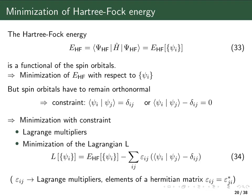The Slater determinant is essentially just an anti-symmetrized product of spin orbitals, which means that our Hartree-Fock energy — which is an integral over Slater determinants and the Hamiltonian of the system — is a function of the set of occupied spin orbitals. So if we want to minimize the Hartree-Fock energy, the things we can vary are our spin orbitals.